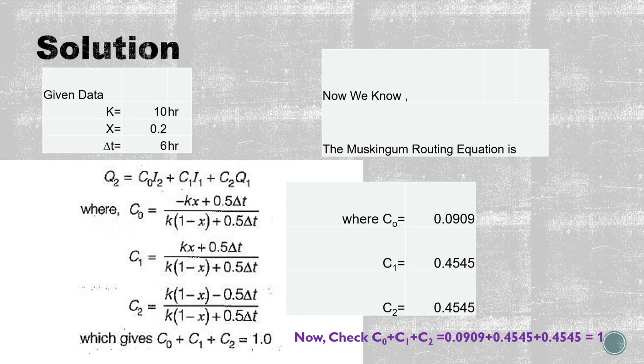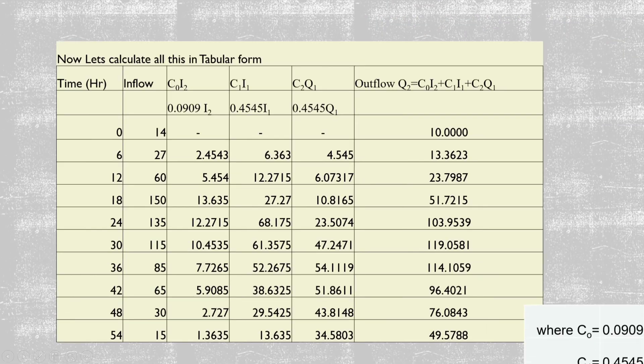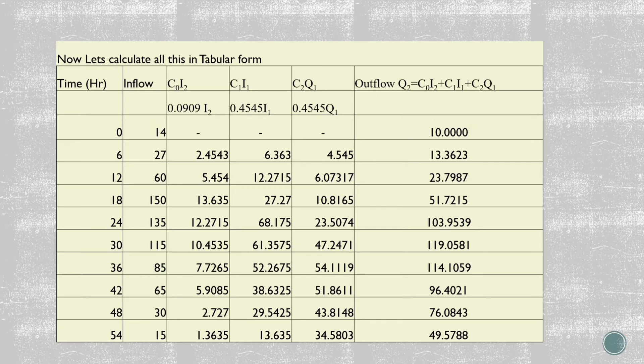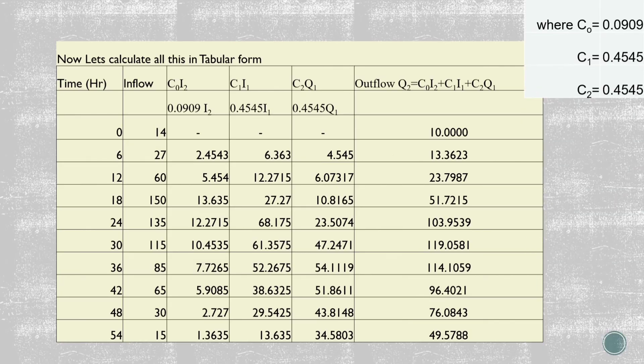Now let's move to the next step. Now C0*I2 shall be calculated. We have already calculated the value of C0 as 0.0909, and I2 should be taken from the inflow, which is 27.